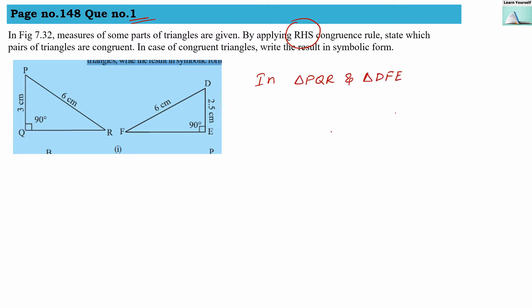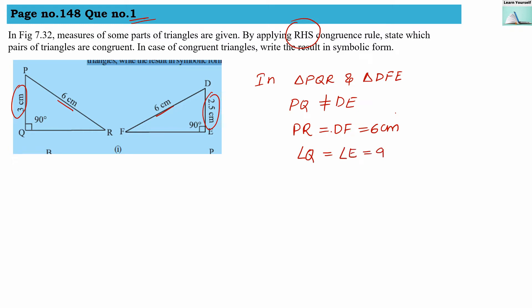In triangles PQR and DFE, we can see that PQ is 3 centimeters and DE is 2.5 centimeters, so PQ is not equal to DE. The hypotenuse PR equals DF equals 6 centimeters, and angle Q equals angle E, both being 90 degrees. But since one side is not equal, these two triangles are not congruent as per the RHS criteria.